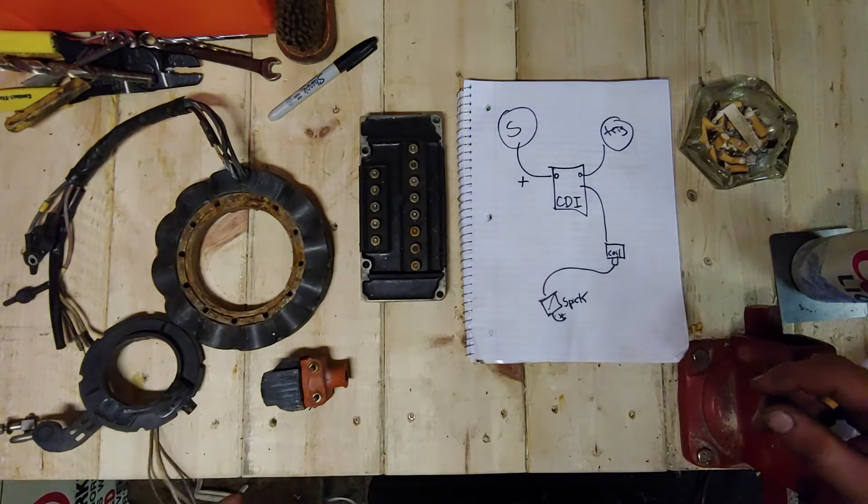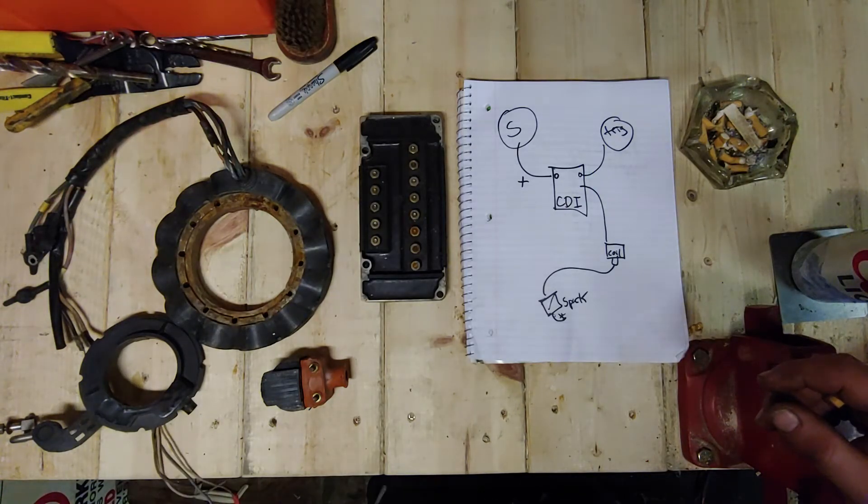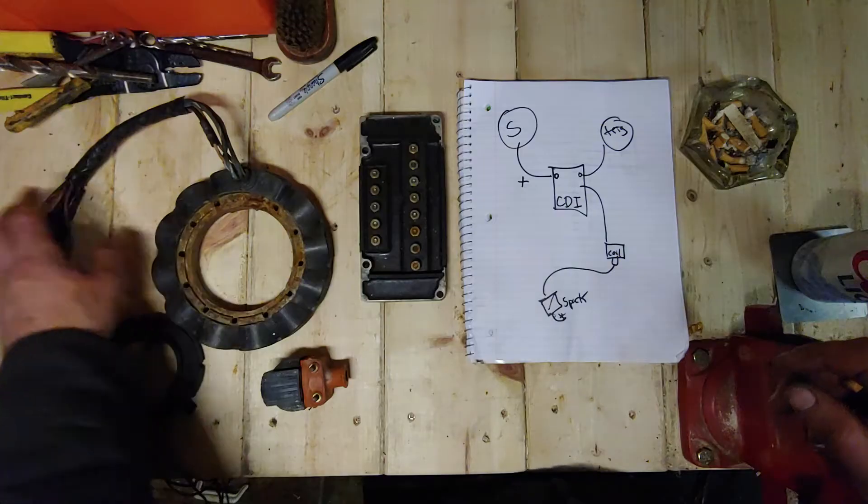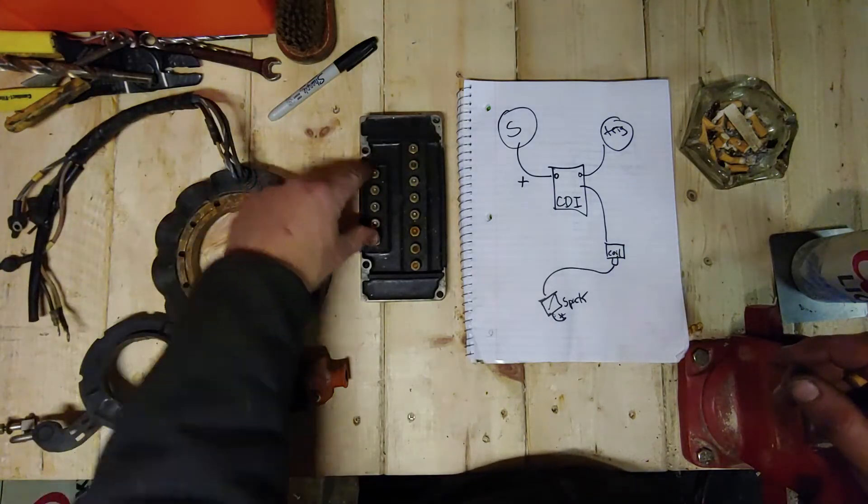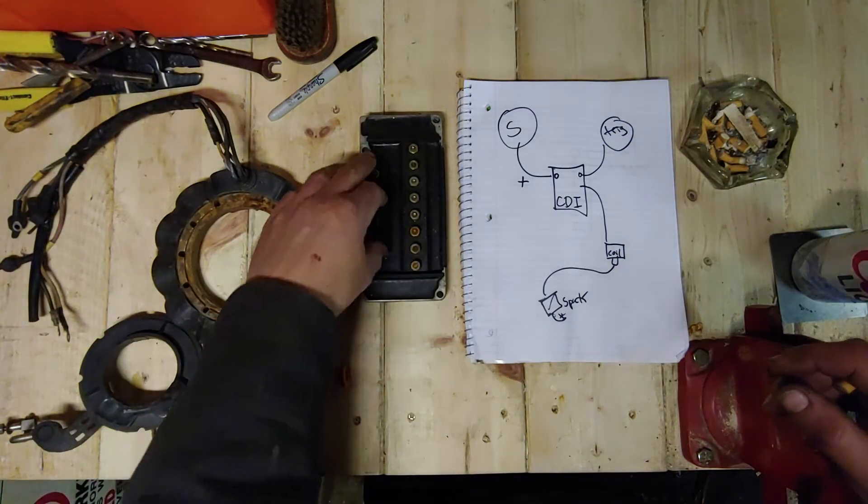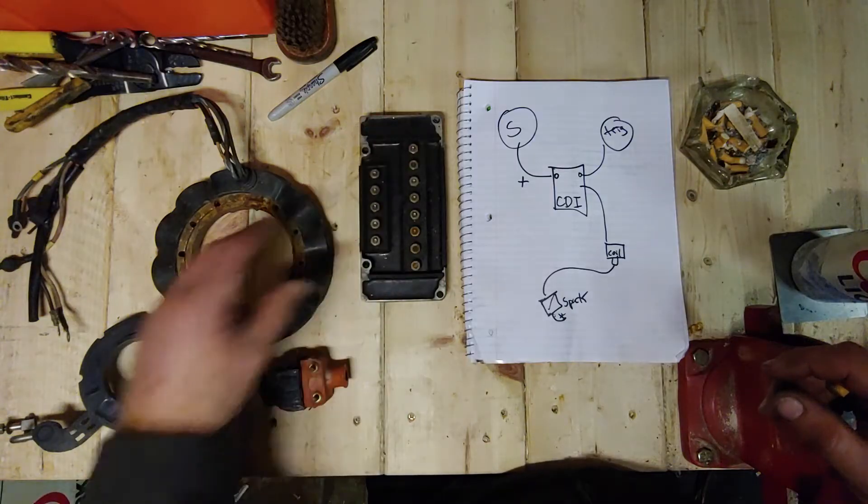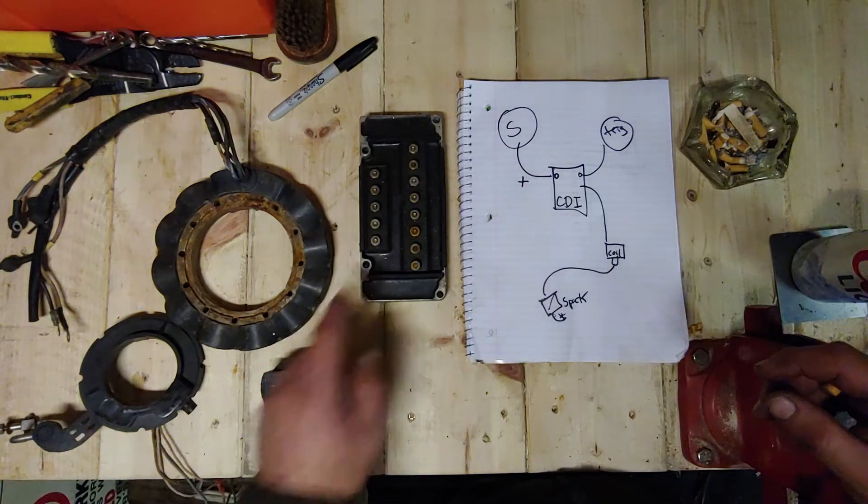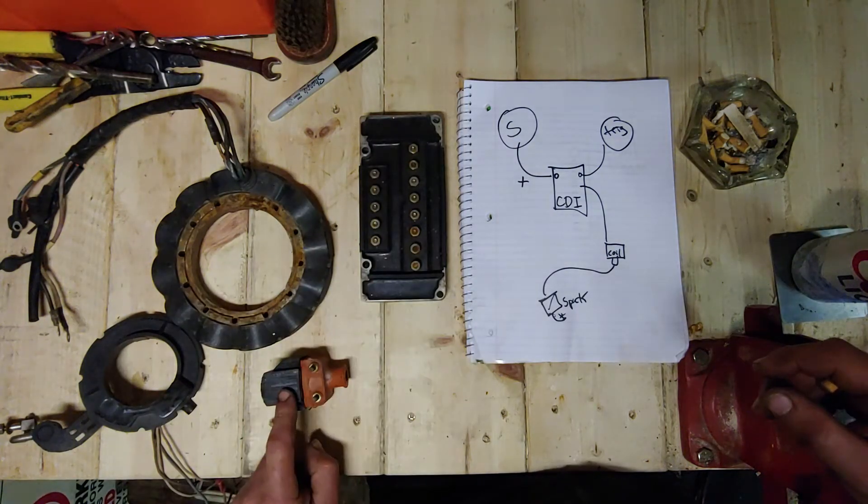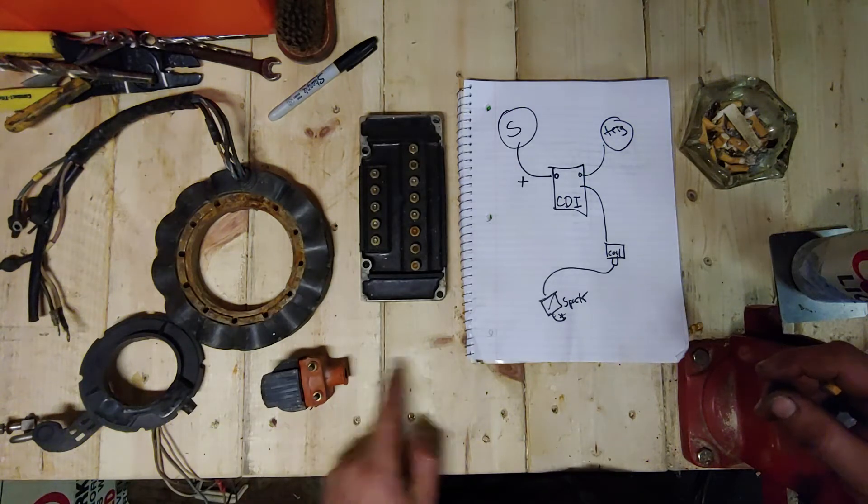So, this thing puts voltage into this box. The box now holds voltage and it wants to release the voltage to your coil so that your coil can release voltage to the spark plug.